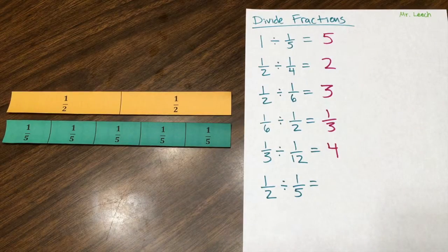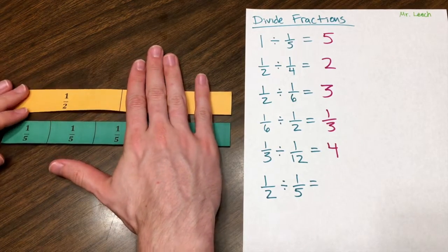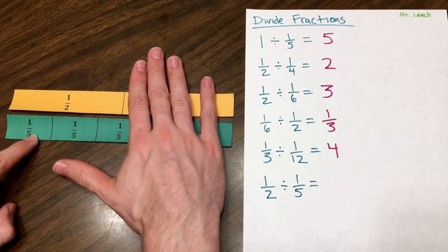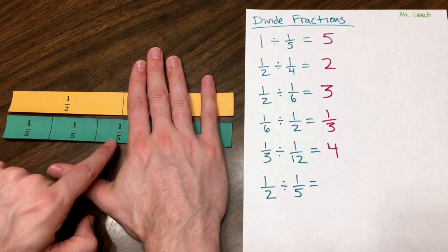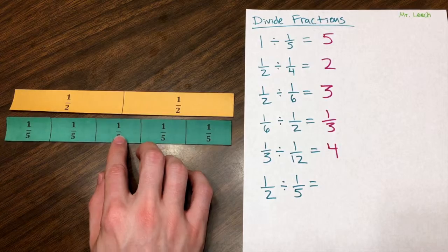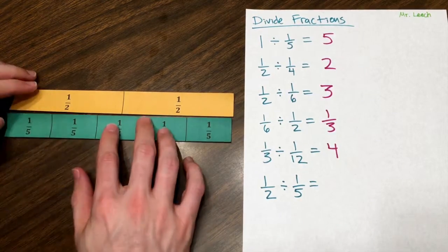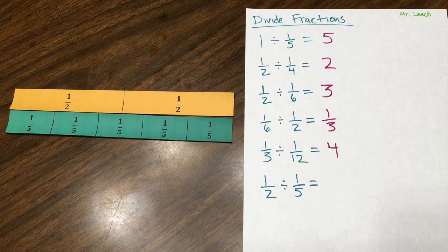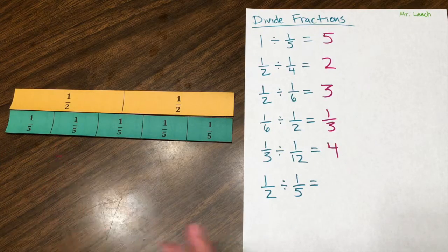Lastly, what is one-half divided by one-fifth? So I'm only looking at one of these one-halves. I see that I can fit one whole one-fifth, another one-fifth, but I can't quite fit this third one-fifth into one-half. Well how much of this one-fifth does go into that one-half? Well it looks about half of it, and it is exactly half. So another way of thinking about this is that it's two and a half.